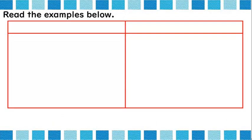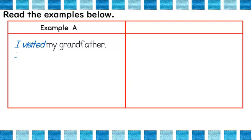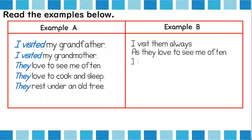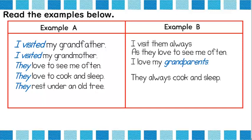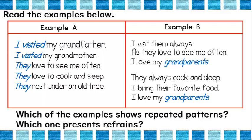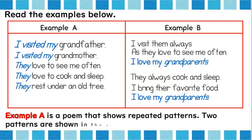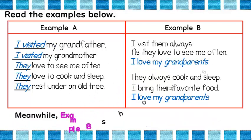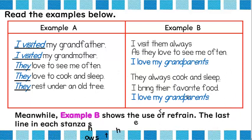Read the examples below. Example A: I visited my grandfather. I visited my grandmother. They love to see me often. They love to cook and sleep. They rest under an old tree. Example B: I visit them always, as they love to see me often. I love my grandparents. They always cook and sleep. I bring their favorite food. I love my grandparents. Example A is a poem that shows repeated patterns — 'I visited my' and the word 'they.' Meanwhile, Example B shows the use of refrain. The last line in each stanza shows the refrain of the poem.